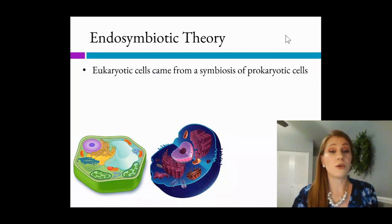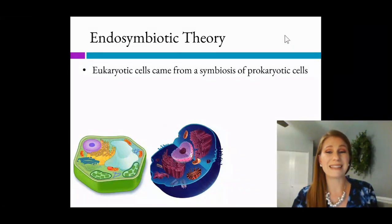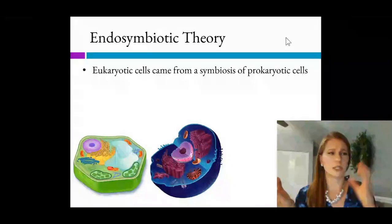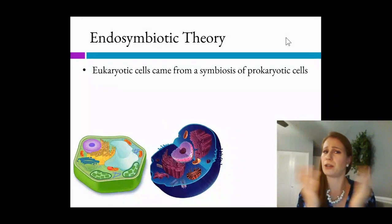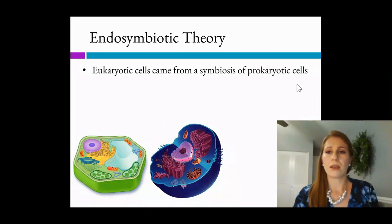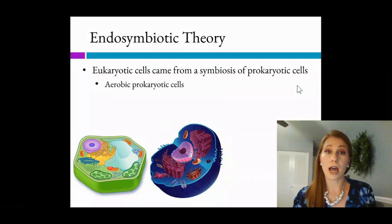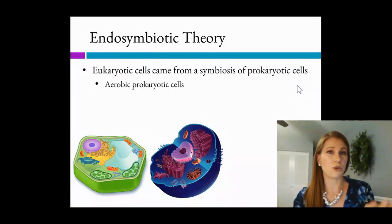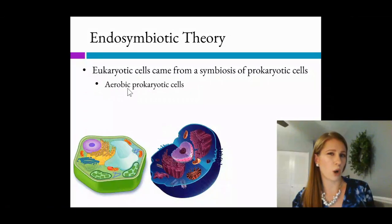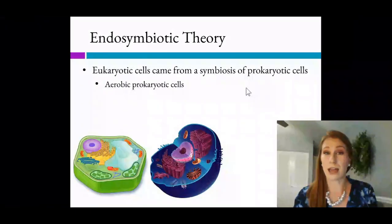So this theory is that eukaryotic cells came from a symbiosis, or coming together, of prokaryotic cells. So prokaryotic plus prokaryotic, you put them together and you've got a eukaryotic cell. Now these prokaryotic cells were of two different kinds. The first kind was theorized to use oxygen, or that's where the aerobic part comes from, oxygen, to make energy.